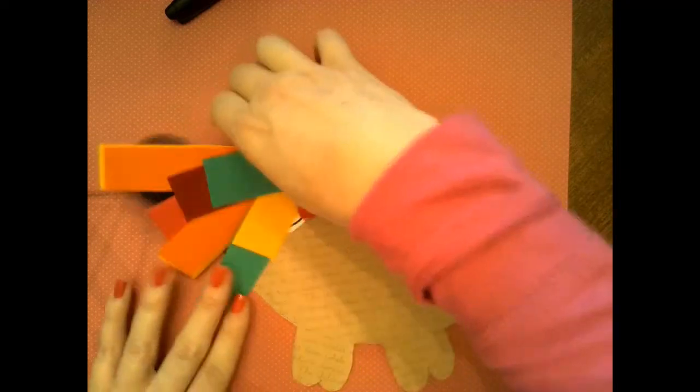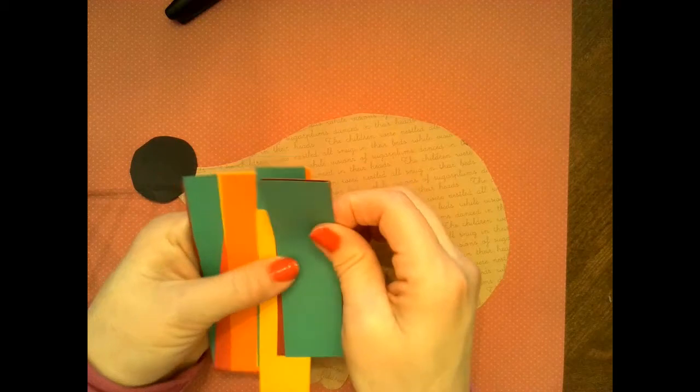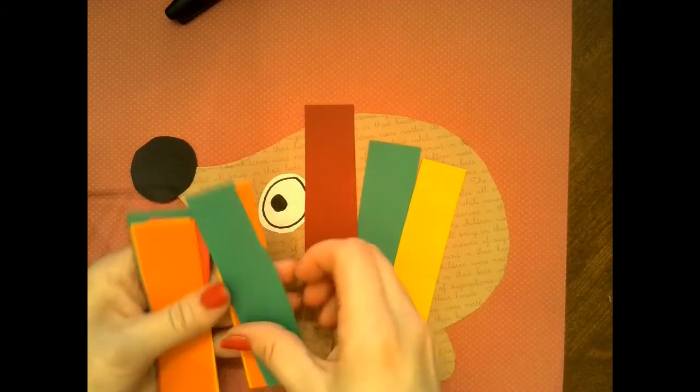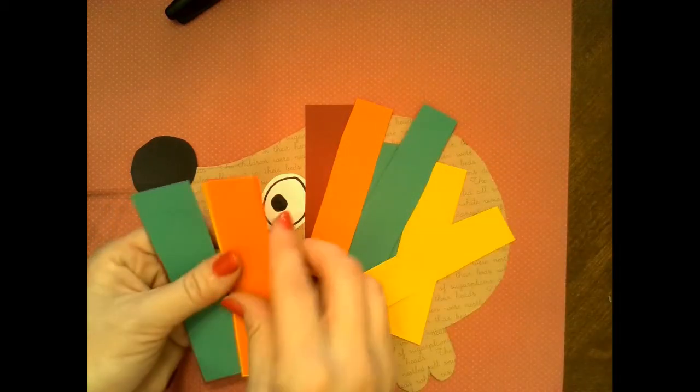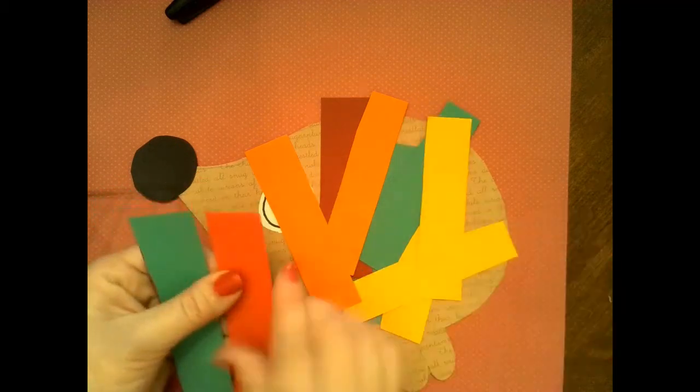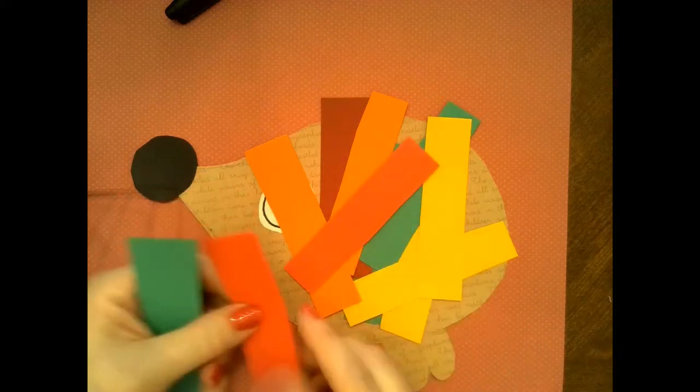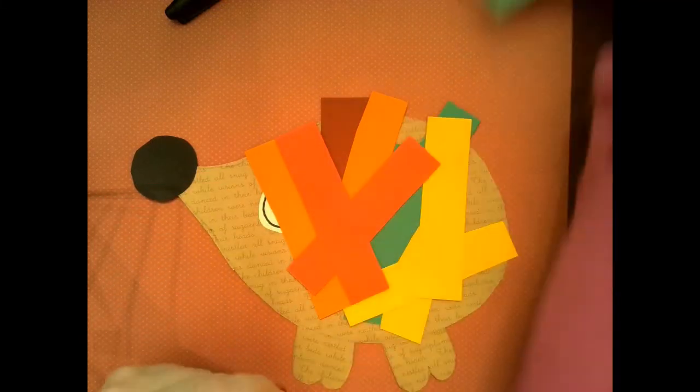All right, so I have all my strips here. Let me make sure I have ten. I might have a little bit more. Let's count together. I have one, two, three, four, five, six, seven, eight, nine. Oh, they're stuck together. Nine, ten. I do have two more extras, so I'm going to put those to the side.